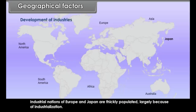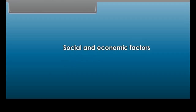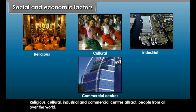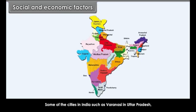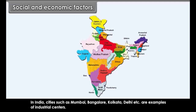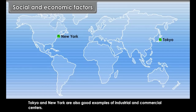Social and Economic Factors: Religious, cultural, industrial and commercial centres attract people from all over the world. Some cities in India such as Varanasi in Uttar Pradesh, Puri in Orissa, Kanchipuram in Tamil Nadu, and Tirupati in Andhra Pradesh are examples of religious centres. Cities such as Mumbai, Bangalore, Kolkata, and Delhi are examples of industrial centres. Tokyo and New York are also good examples of industrial and commercial centres.